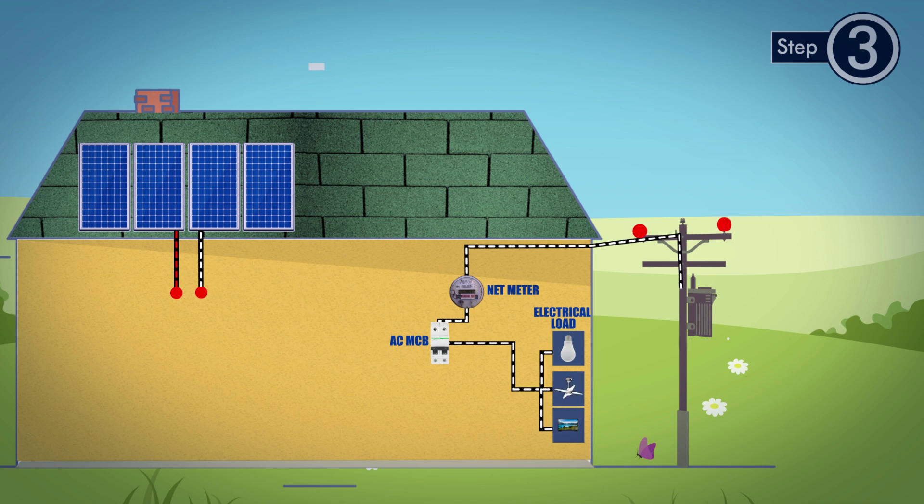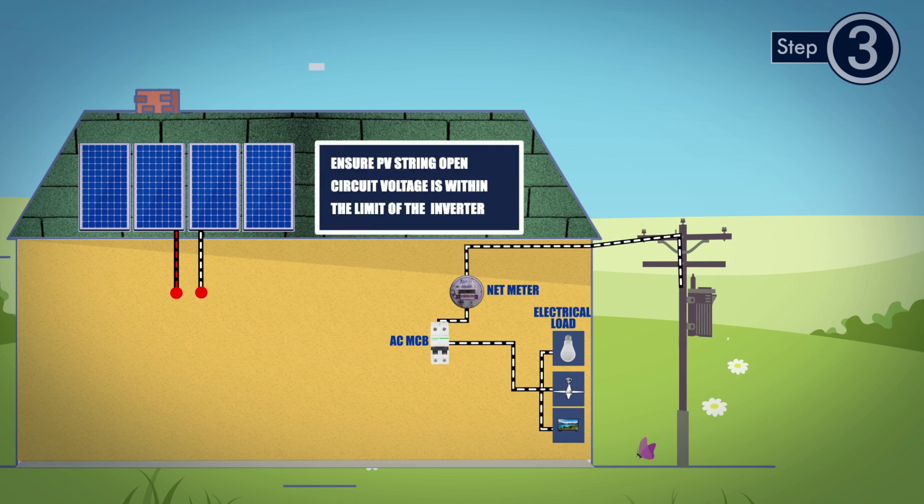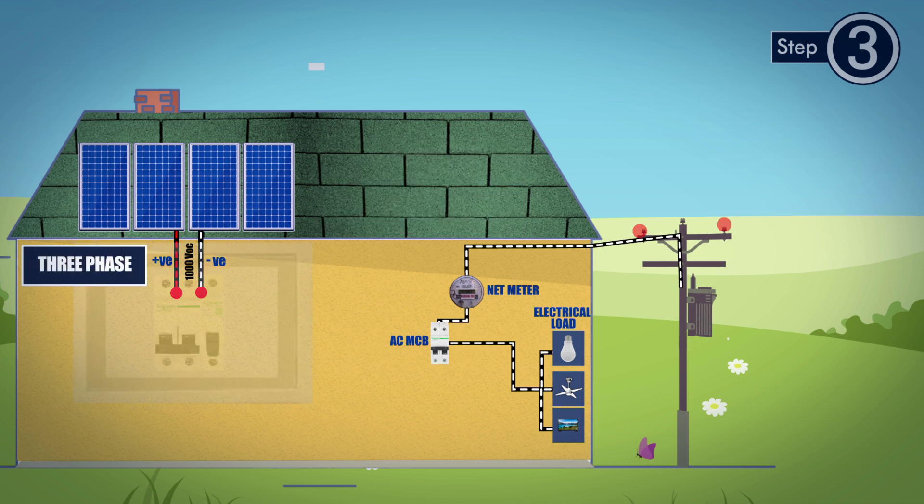Before connecting inverter, please make sure the PV string open circuit voltage is within the limit of the inverter. That is, maximum 600V open circuit for single phase inverters, maximum 1000V open circuit for three phase inverters.